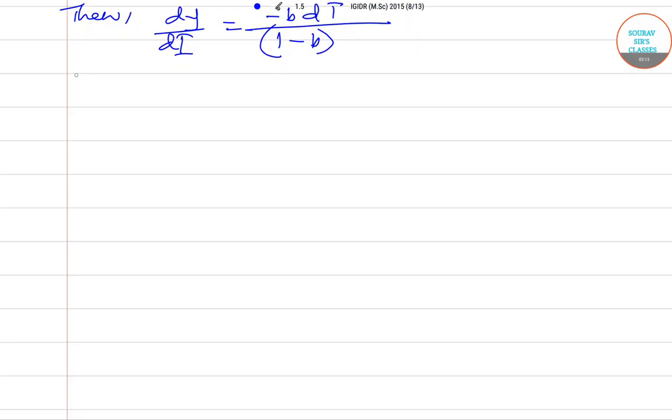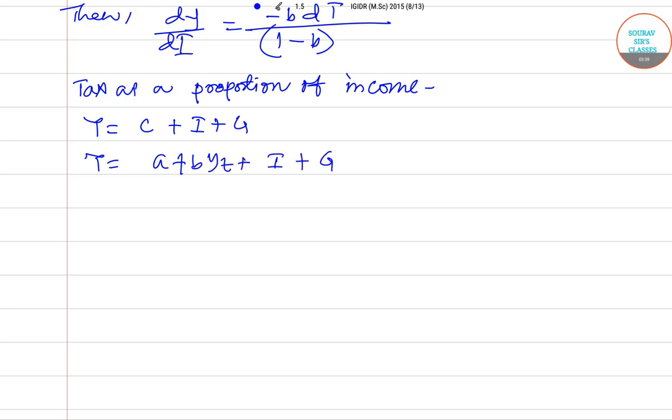Moving to the case for the tax as a proportion of income. So Y equals C plus I plus G. Y equals A plus B(Y minus YT) plus I plus G, so a proportional tax. Again taking total differentiation.